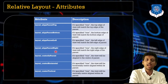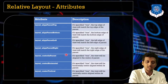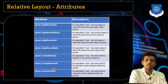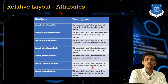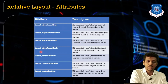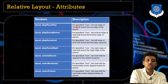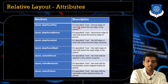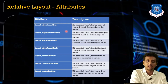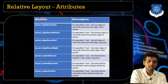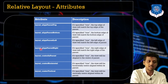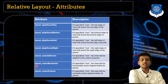layout_alignParentRight matches the right edge of the parent. layout_centerInParent aligns the view in the center. layout_centerHorizontal sets the view horizontally centered — if this is my whole screen, the view will be placed at the horizontal center. layout_centerVertical places the view at the vertical center. So you can use either center_vertical or center_horizontal depending on the desired alignment.